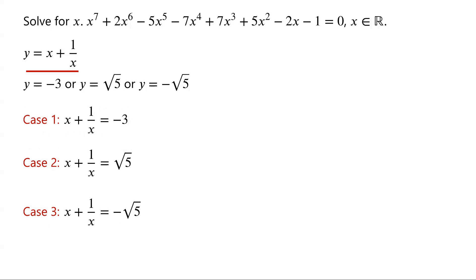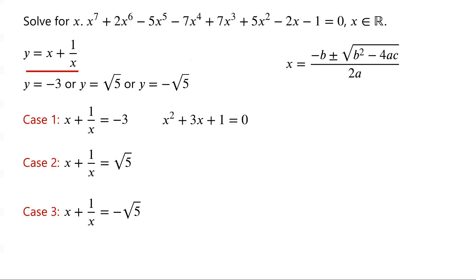For case 1, multiply the equation by x and rearrange: x squared plus 3x plus 1 equals 0. This is a quadratic equation. Applying the quadratic formula x equals (negative b plus or minus root of b squared minus 4ac) over 2a, with a equals 1, b equals 3, and c equals 1, we get x equals (negative 3 plus or minus root 5) over 2.